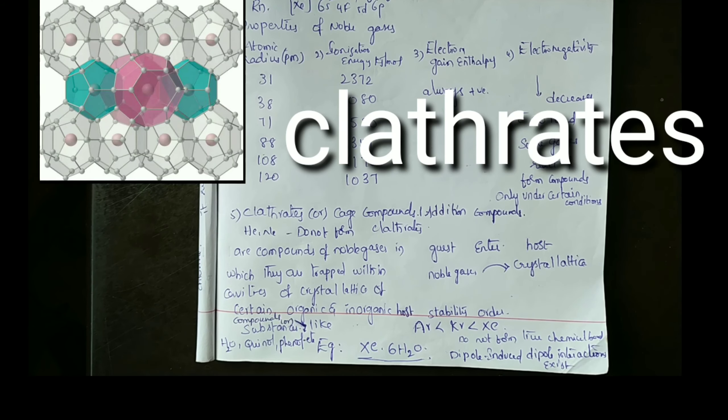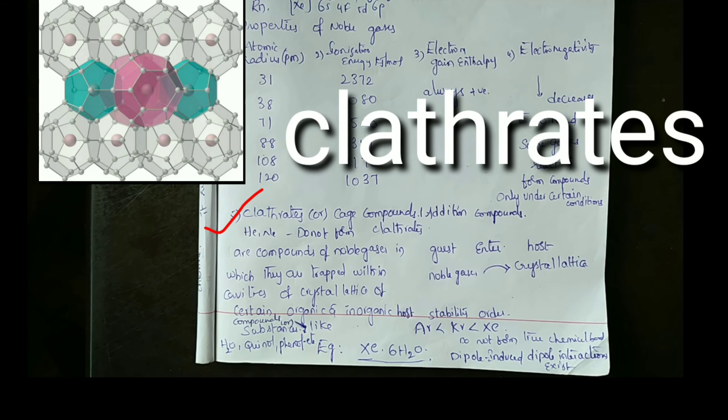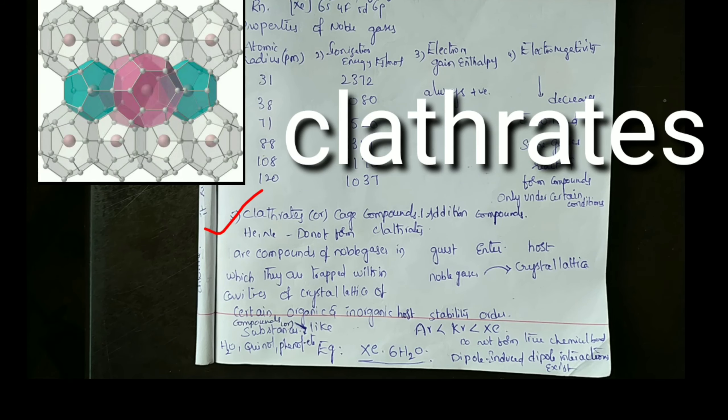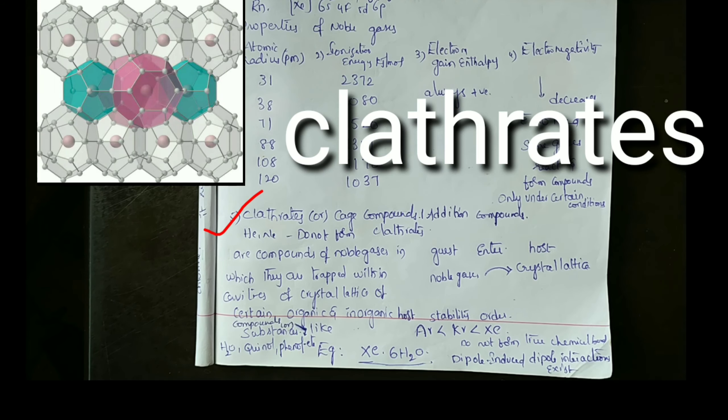Clathrates or cage compounds. Helium and neon do not form clathrates. Remaining argon, krypton, and xenon form clathrates.